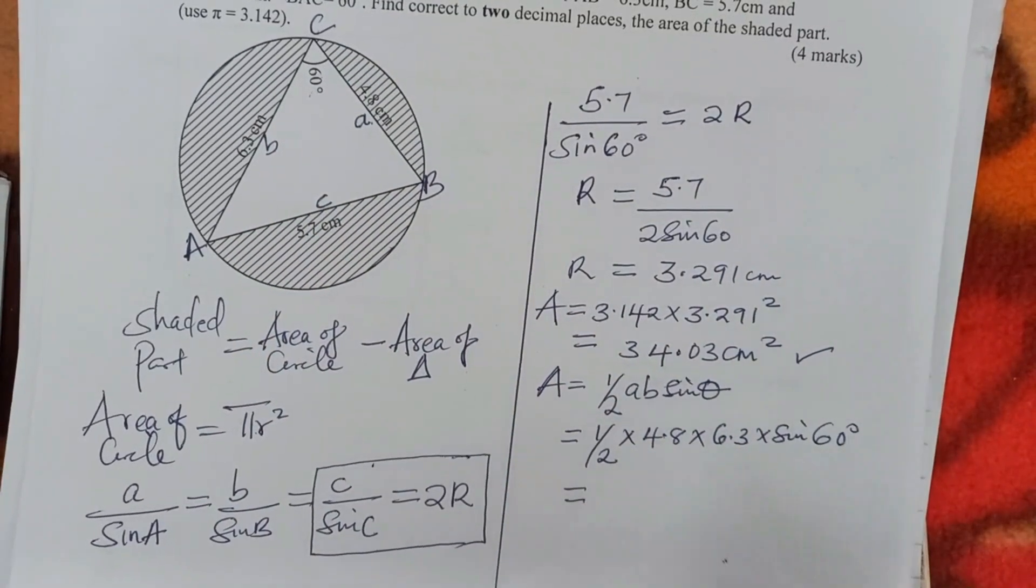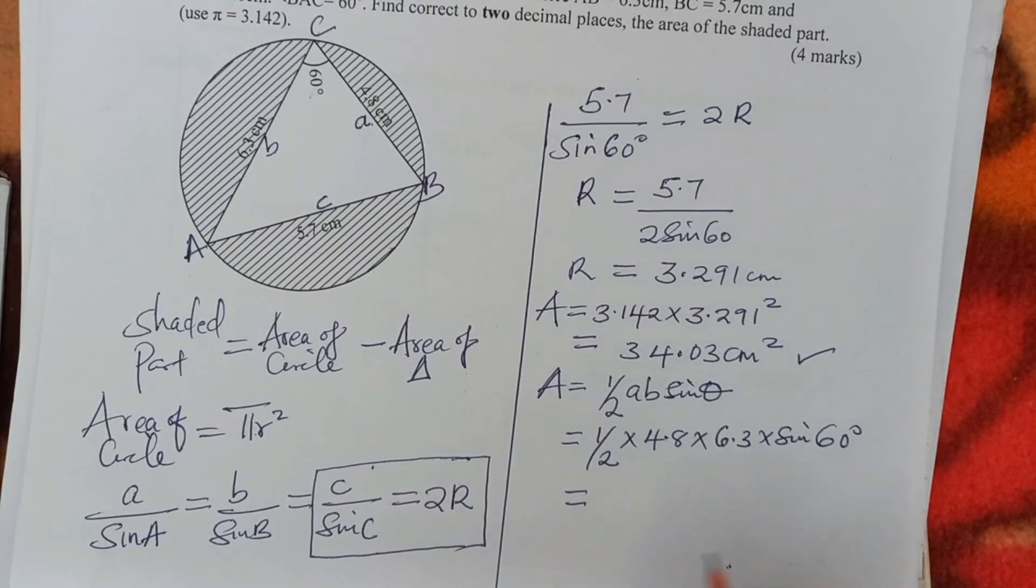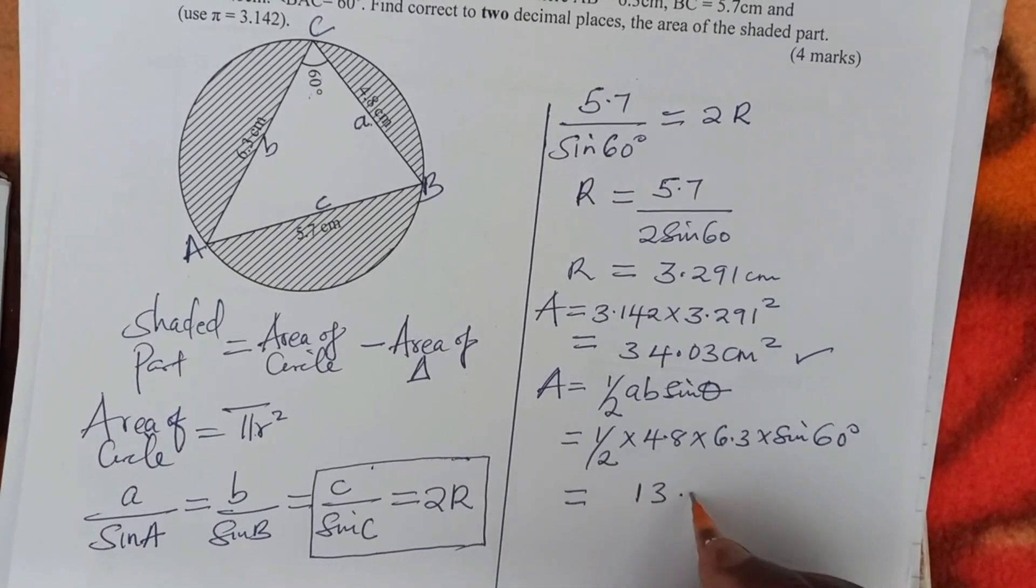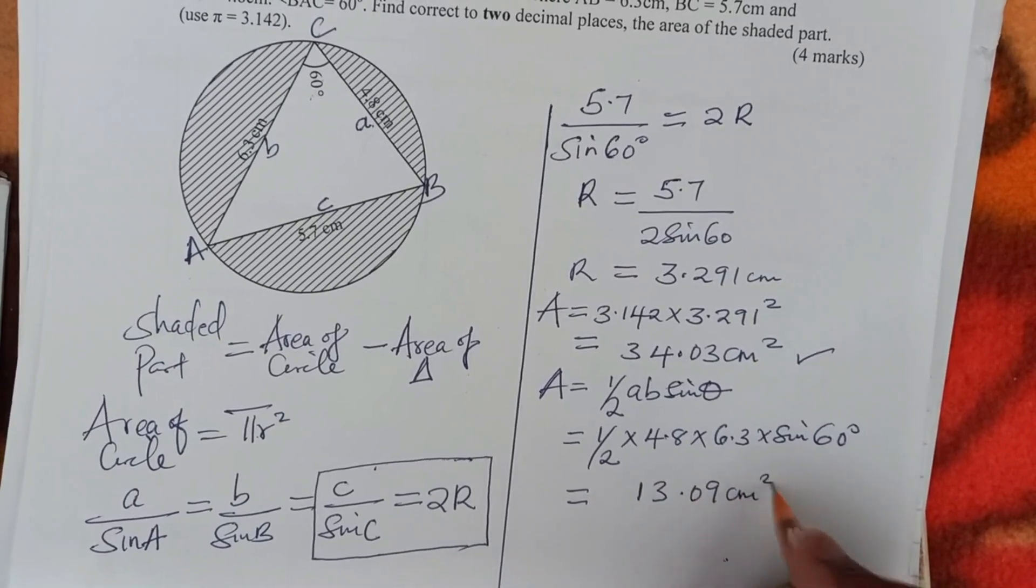So work out this using a calculator. Get the area of the triangle to four significant figures. This will give 13.09 centimeters squared.